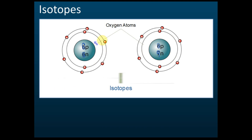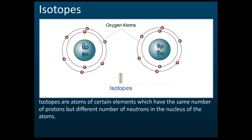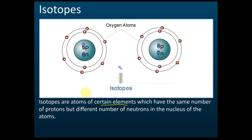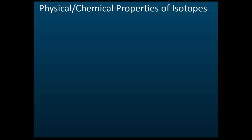This is called isotopes. What are isotopes? Isotopes are atoms of certain elements — they must come from the same element. They have the same number of protons, both have eight protons, but they have different numbers of neutrons in the nucleus. That is called isotopes.